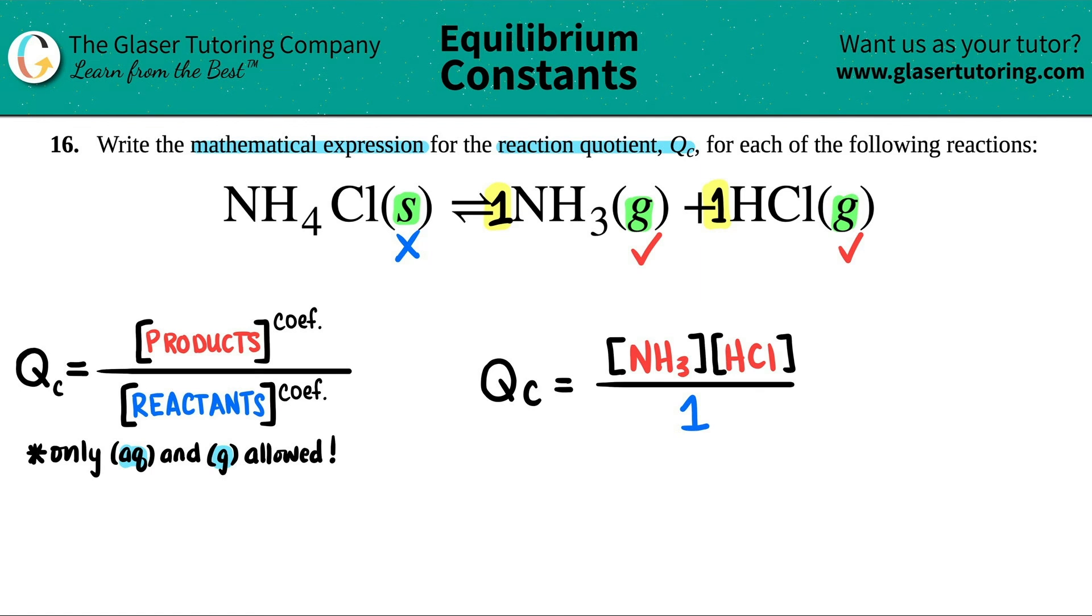And that's it. But simplify it up. This is too easy. You're not going to see this on a test or a quiz, right? Remember, anything divided by one is itself. So I'm going to skip, well, not skip, but get rid of the one and get rid of the division sign. The Qc is just equal to the numerator. And that's it. So in this case, the Qc is just the concentration of NH3 times the concentration of the HCl. And there you go.